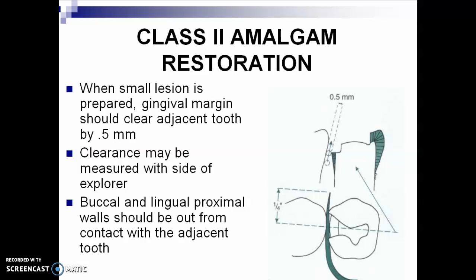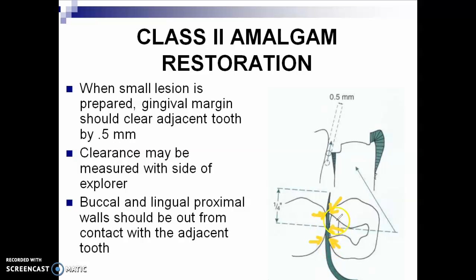When a small lesion is prepared, the gingival margin should clear the adjacent tooth by 0.5 millimeters. In the typodont, since it's ideal, we work on 0.5 millimeter clearance. Clearance may be measured with the side of the explorer, but more accurately with just the tip of the explorer. Then, buccal and lingual walls in the proximal box area should be out of contact with the adjacent tooth — check that there is no more contact on the buccal, on the lingual, and at the gingival.